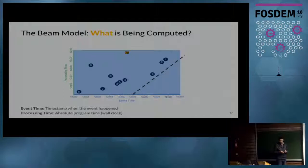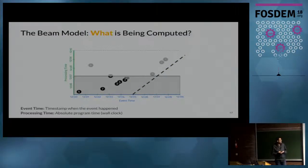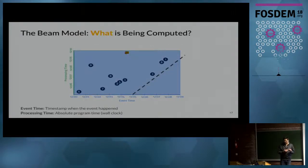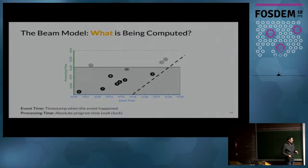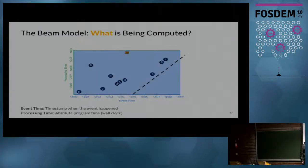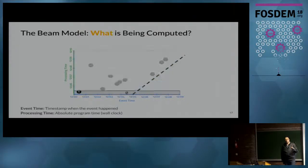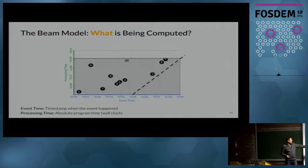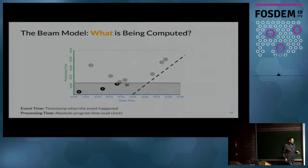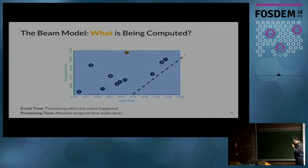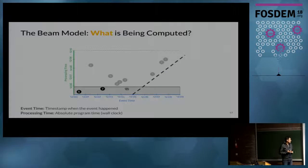Before I said Beam answers four questions — these are to unify batch and streaming semantics. The problem is that events happen in time: the X axis corresponds to event time, the moment when an event happens, and the vertical axis is the moment the event arrives at the server for processing. Ideally we'd process events at the same time they happen — this is the diagonal line we call the watermark — but this is just an approximation.